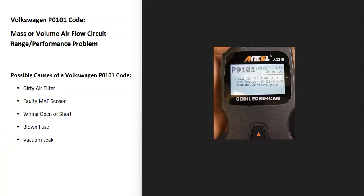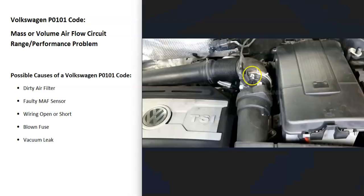Today I'm talking about a Volkswagen with the P0101 code, what it is and how you go about fixing it. A Volkswagen P0101 code is a mass or volume airflow circuit range performance problem. Many Volkswagen engines have what's called a MAF sensor, or mass airflow sensor, which measures all the air going into the engine. The onboard computer uses this information to adjust the air-fuel ratio mixture going into the cylinders, and it's detected a problem.